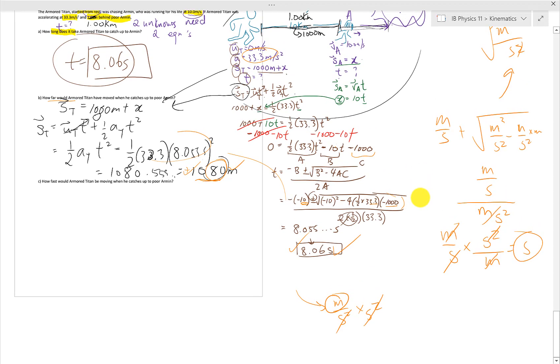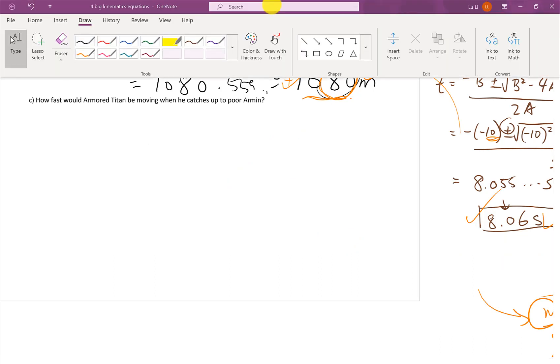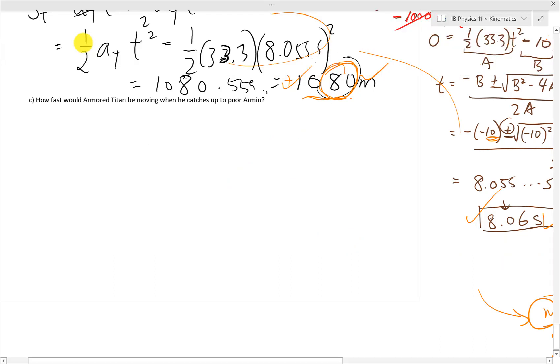And if you think about it, if Armin took 8 seconds to travel, so 8 times 10, which is his velocity, 8 times 10 gives us about 80 meters of Armin's travel time. So that 80 meters makes sense as well. Of course, all that falls apart if we found the wrong, if we calculate the wrong time and everything.